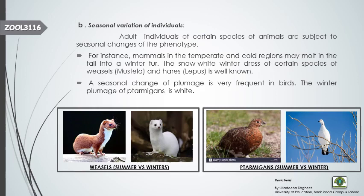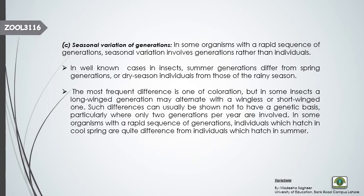The same is the case with birds. For example, ptarmigans look one color in summer and in winter they shed their plumage — the layer of feathers present on the body of the bird — and become a different color. The third type of individual variation in time is the seasonal variation of generations.